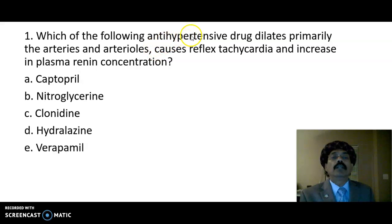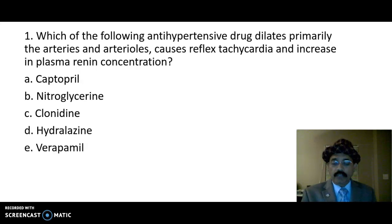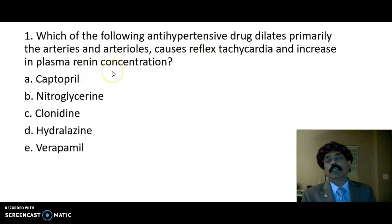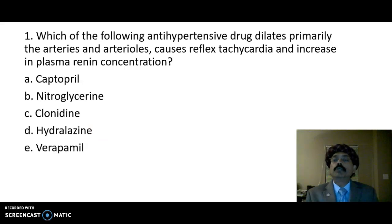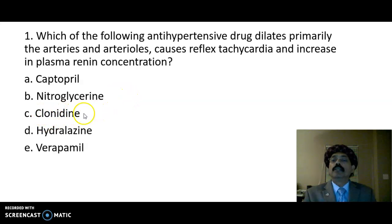The antihypertensive drug that works on the arteries and arterioles has smooth muscle, so it should relax the smooth muscle and cause reflex tachycardia and increase renin concentration. These all point to hydralazine — not an ACE inhibitor, not nitroglycerin which is an arteriole-venodilator, and not verapamil which is a calcium channel blocker. So the choice should be hydralazine. D is the choice.